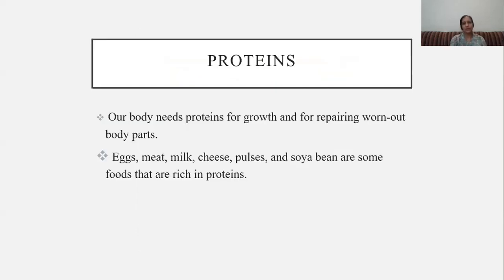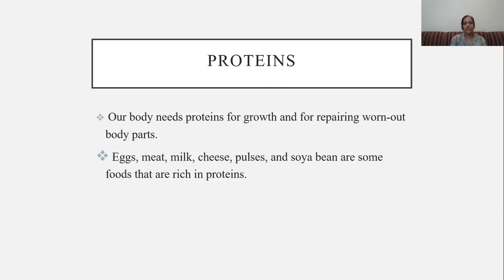The other nutrient we are going to talk about is proteins. Our body needs proteins for growth and for repairing worn-out body parts — that is the function of proteins. Children, you must try to eat eggs, meat, milk, cheese, pulses and soya beans, as these are some foods that are rich in proteins.